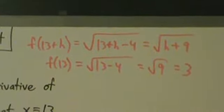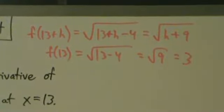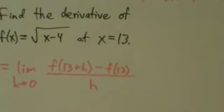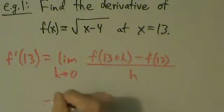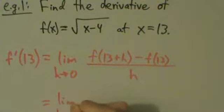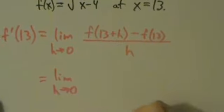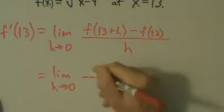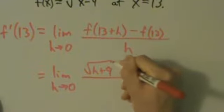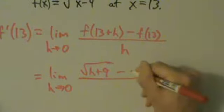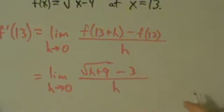Okay, so we have those. Now let's go ahead and take these and put them in here. So this equals the limit as h goes to 0 of the square root of h plus 9 minus 3, all divided by h.